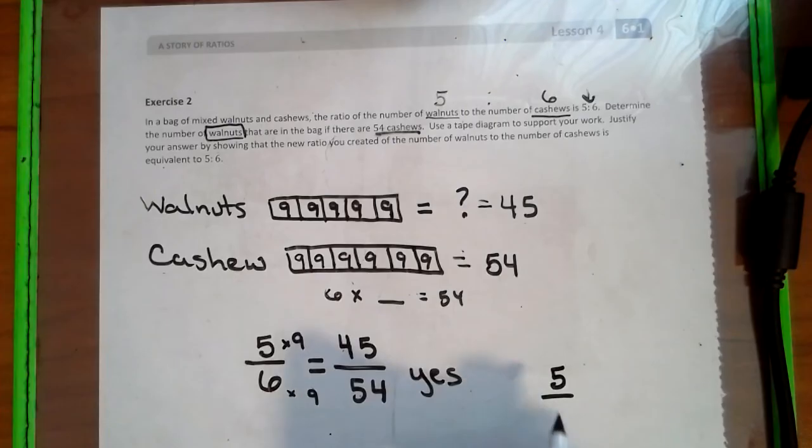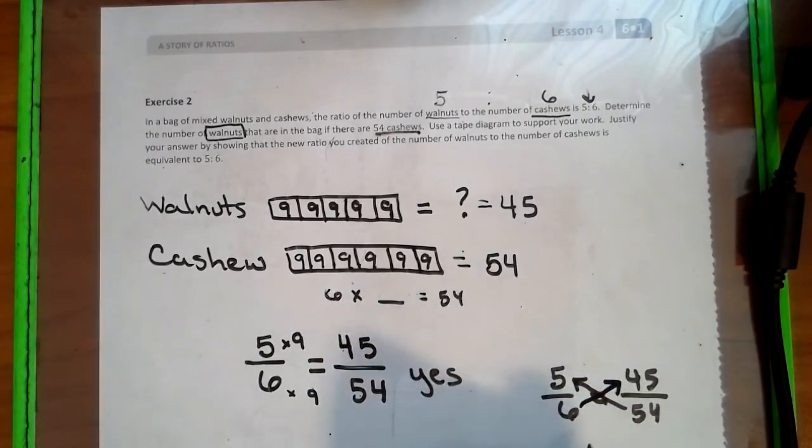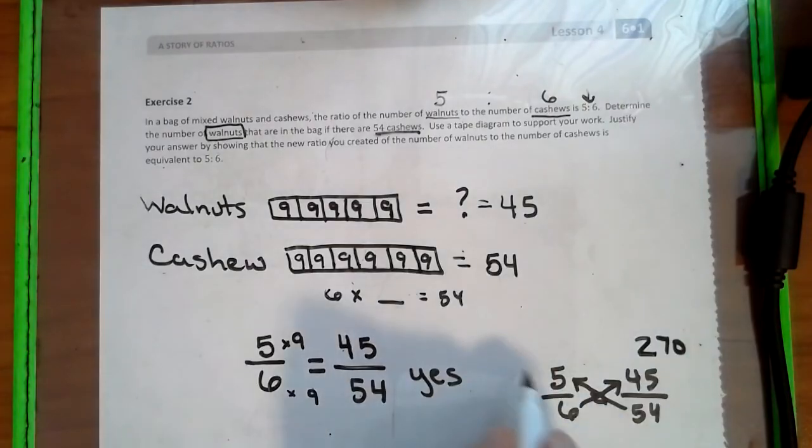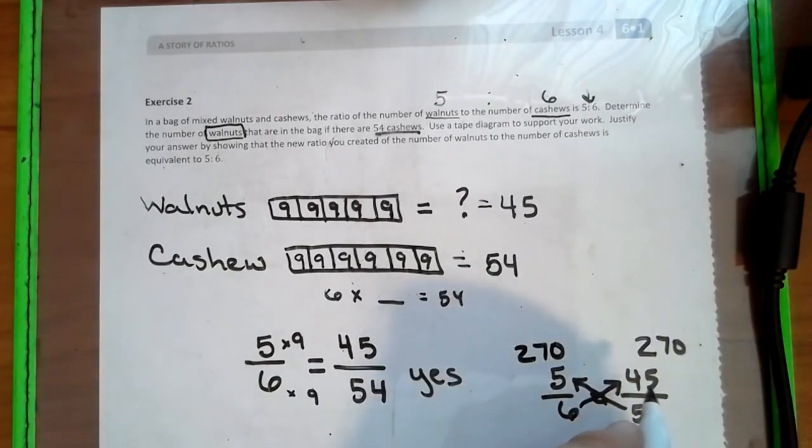Or we can do it like this. We take 5 to 6, 45 to 54. And we can cross-multiply. And we can see if those end up equaling each other. So when we cross-multiply, we get 270 over here. And when we multiply here, we get 270 also. So 54 times 5 is 270. 6 times 45 is 270.